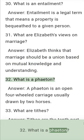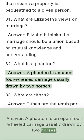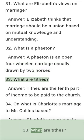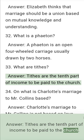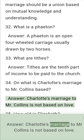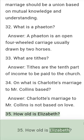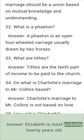Question 32: What is a phaeton? Answer: A phaeton is an open four-wheeled carriage usually drawn by two horses. Question 33: What are tithes? Answer: Tithes are the tenth part of income to be paid to the church. Question 34: On what is Charlotte's marriage to Mr. Collins based? Answer: Charlotte's marriage to Mr. Collins is not based on love. Question 35: How old is Elizabeth? Answer: Elizabeth is most probably 20 years old.